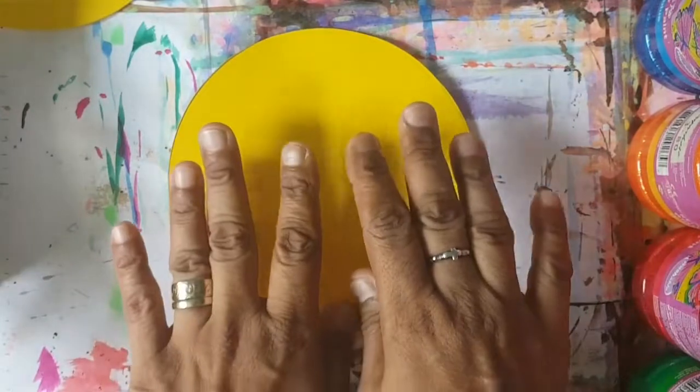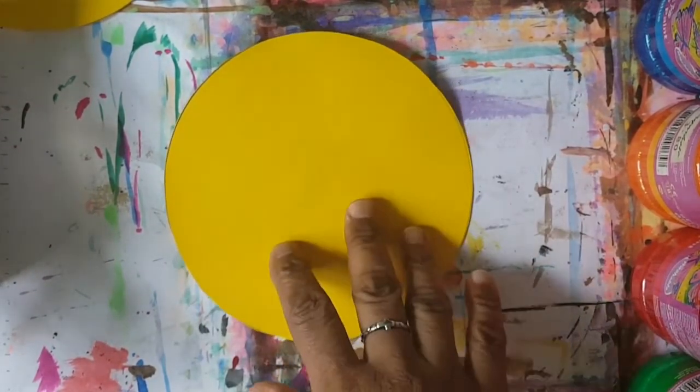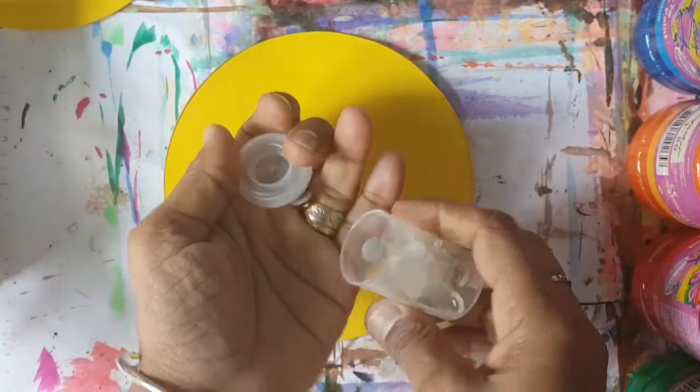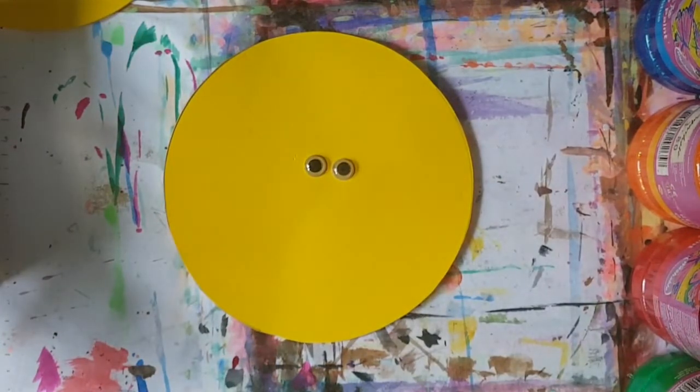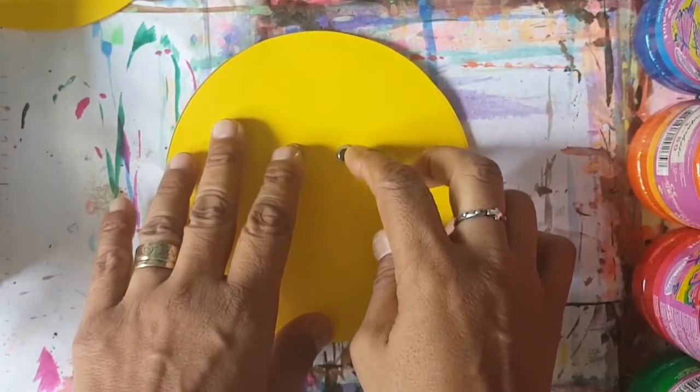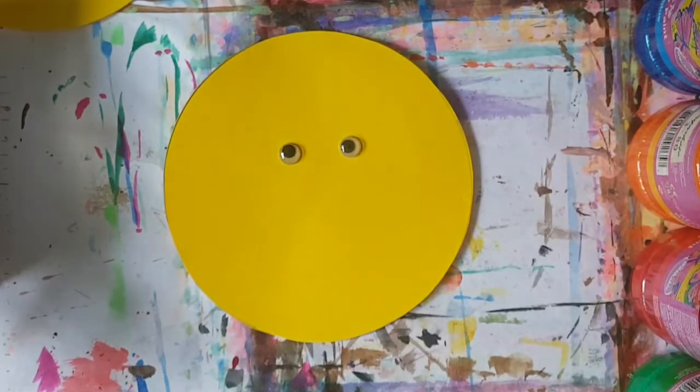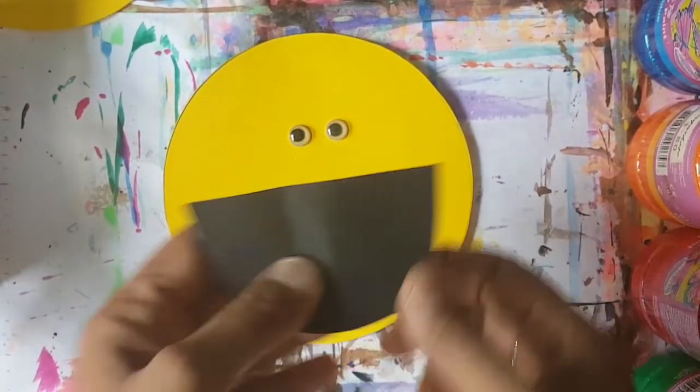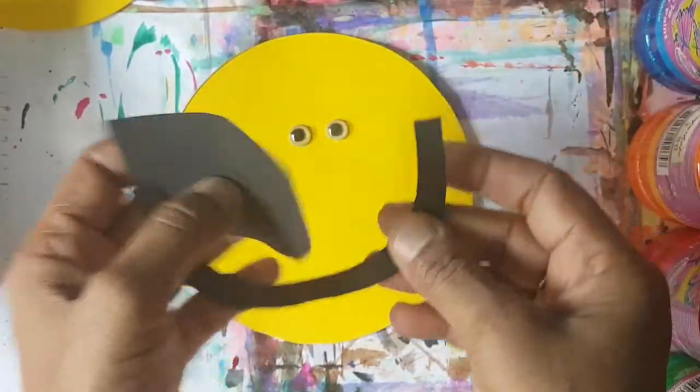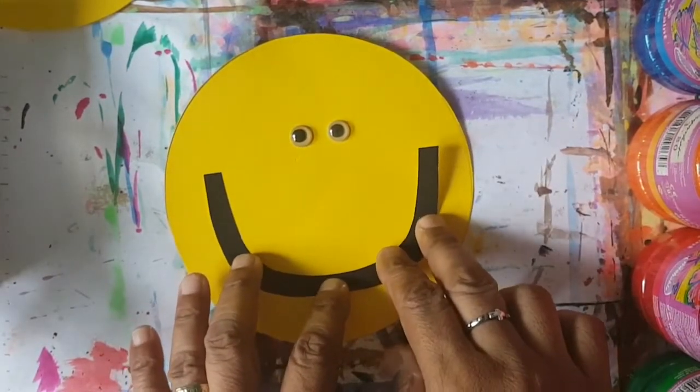We're going to put a smiley face. So what you need is two googly eyes, which I've got here, and a big smile. So we're going to stick this down, and I want to put a really big smile. So I've got a piece of card, and I cut around it to make this smiley face.